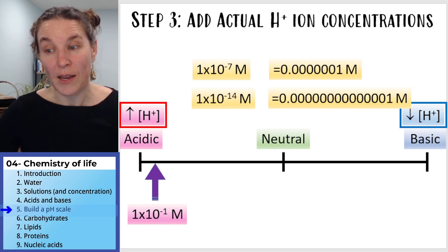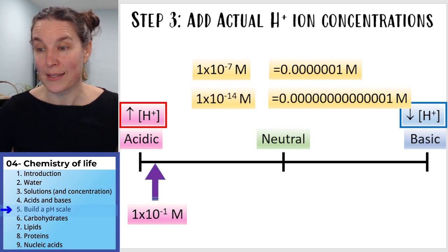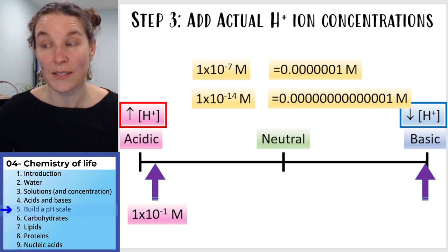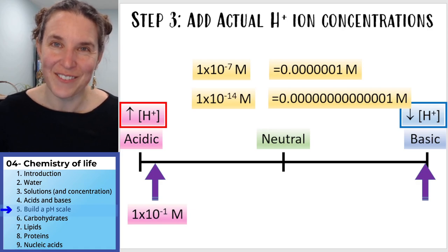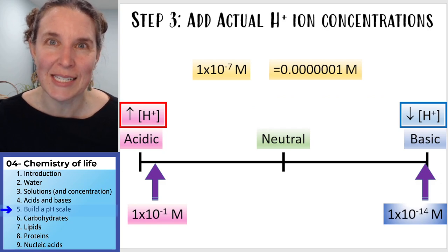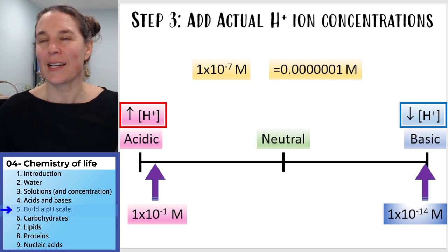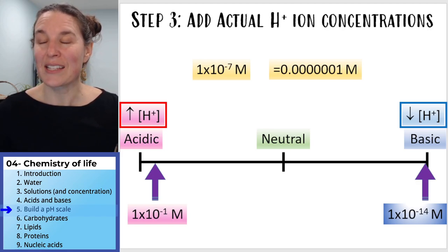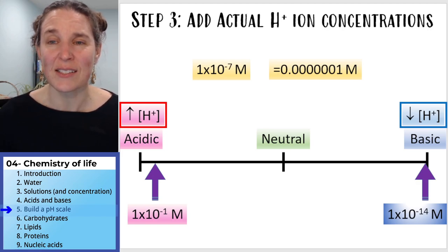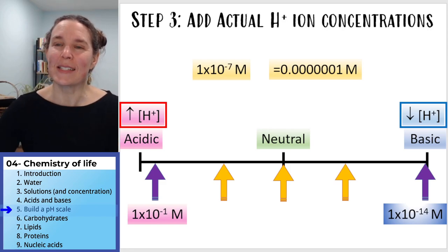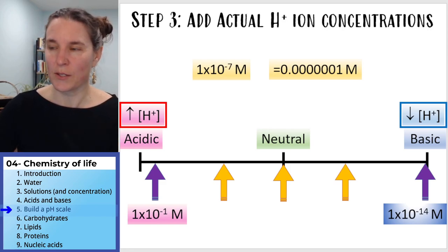Where does the most basic one go? Which of the remaining concentrations has the fewest hydrogen ions? Did you pick 1×10⁻¹⁴? I hope you did, because that is indeed the most basic — it has the fewest hydrogen ions in that concentration.